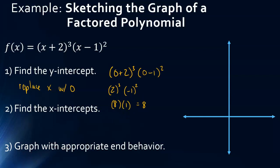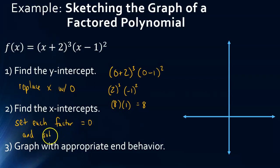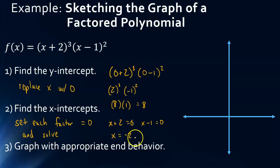Then to find the x-intercepts, we're going to set each factor equal to 0 and solve. If I set x plus 2 equal to 0 and x minus 1 equal to 0, we would get the x-intercepts of negative 2 and positive 1. So we know the x-intercepts are at negative 2 and positive 1, and we know the y-intercept is at 8. Let's plot those points.